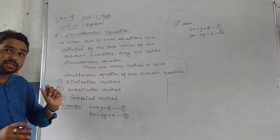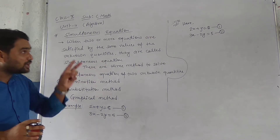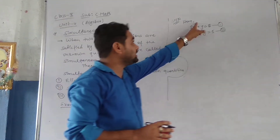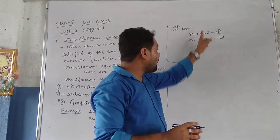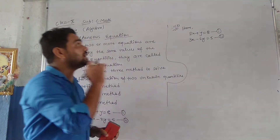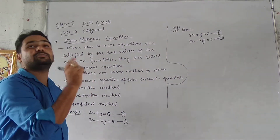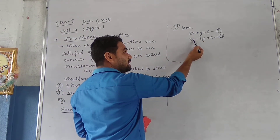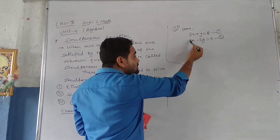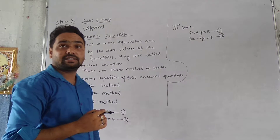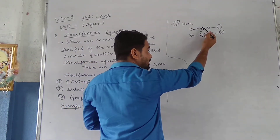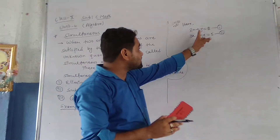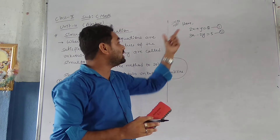We are going to eliminate either x or y. For x, the coefficient is 2 in equation one and 3 in equation two — not equal. For y, the coefficient is 1 in equation one and minus 2 in equation two — also not equal. So to eliminate y, we need the coefficients to be the same. The coefficient of y in equation two is 2, so we multiply equation one by 2 to get an equal coefficient of y.